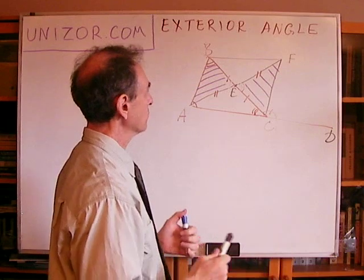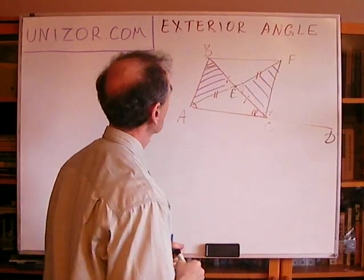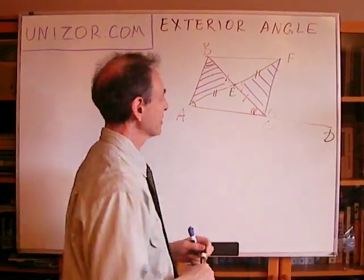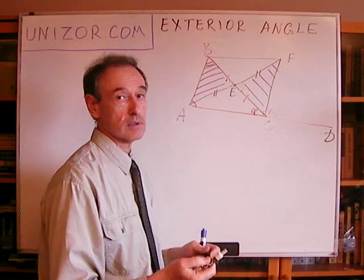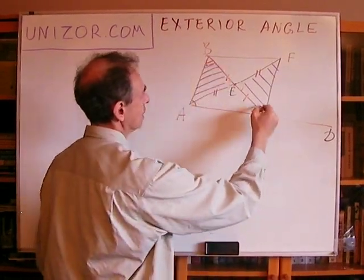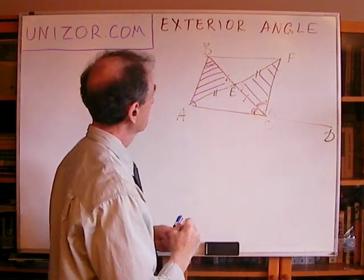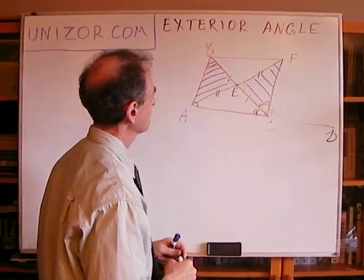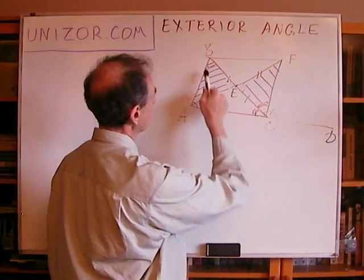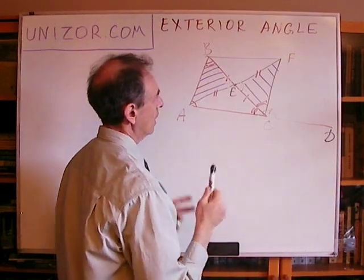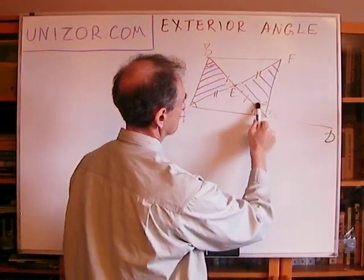Because these two triangles are congruent, we can say that the corresponding angles are also congruent. Corresponding to angle B is angle ACF. So instead of proving that exterior angle ECD is greater than angle ABC, we will prove that it is bigger than angle ACF, which is equal to angle ABC. How do we do that?